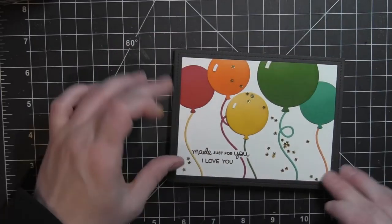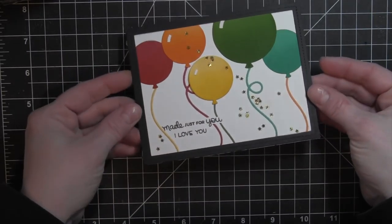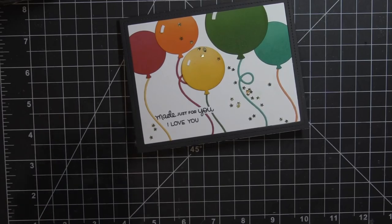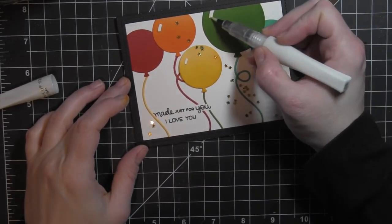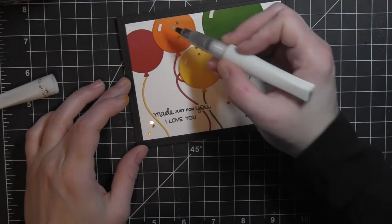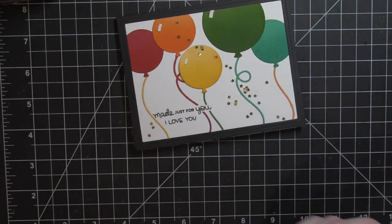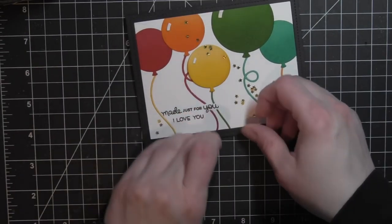At this point, the card is pretty much done. I did take the Wink of Stella clear glitter brush pen and add a little bit of glitter to the little balloon highlights, those little white pieces there. And that will finish off this card design.